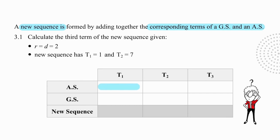The first term of the arithmetic sequence and the first term of the geometric sequence must be added to get the first term of the new sequence, and we know that those two terms will produce a result of 1. The first term of the new sequence is 1 and the second term is 7. We go to the second term of each sequence, and we know those two results will add up to 7.